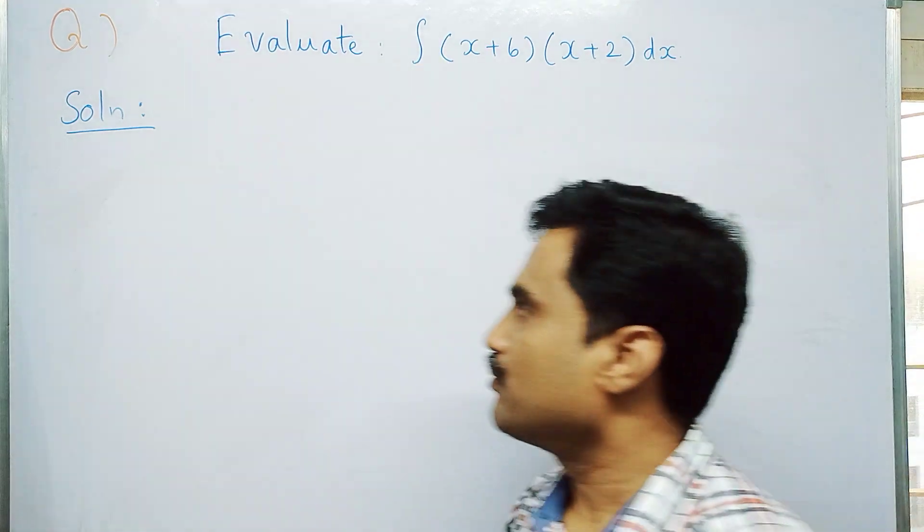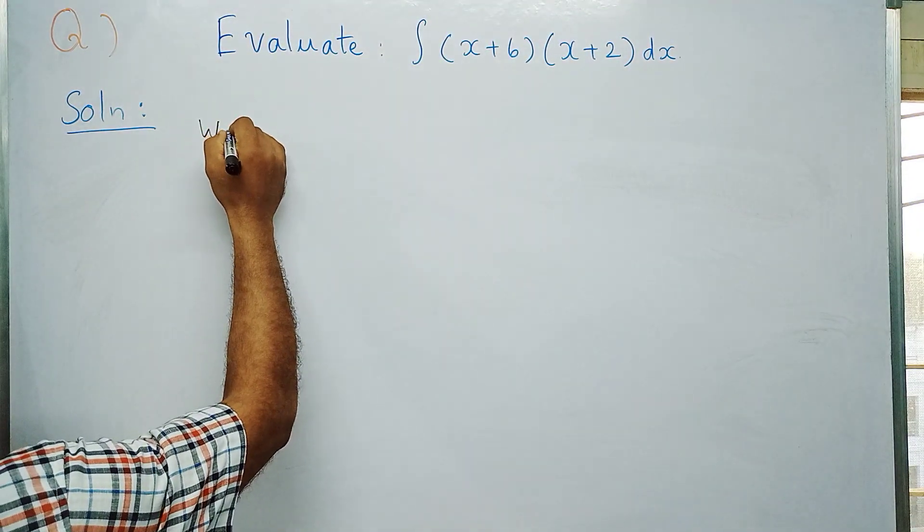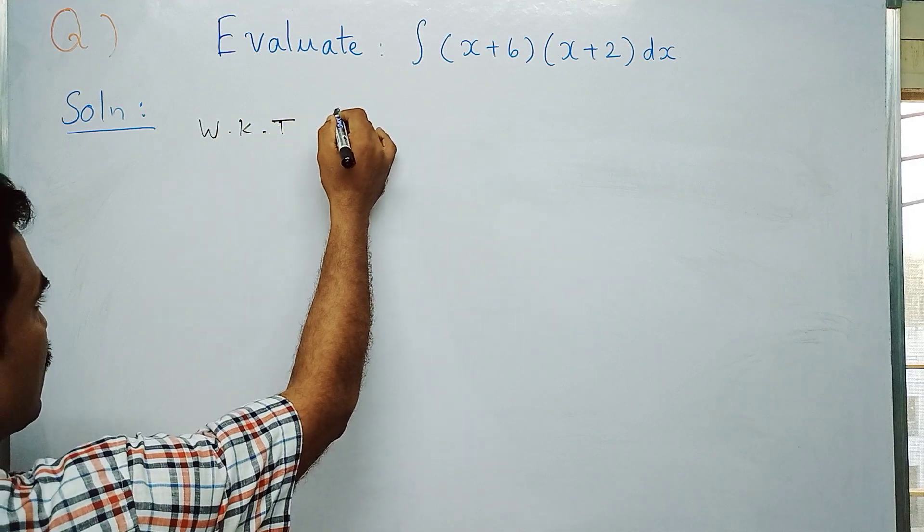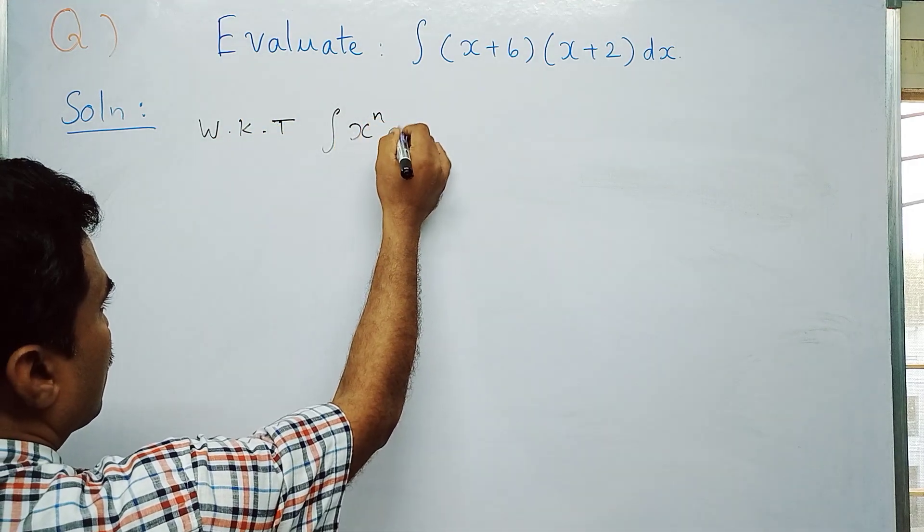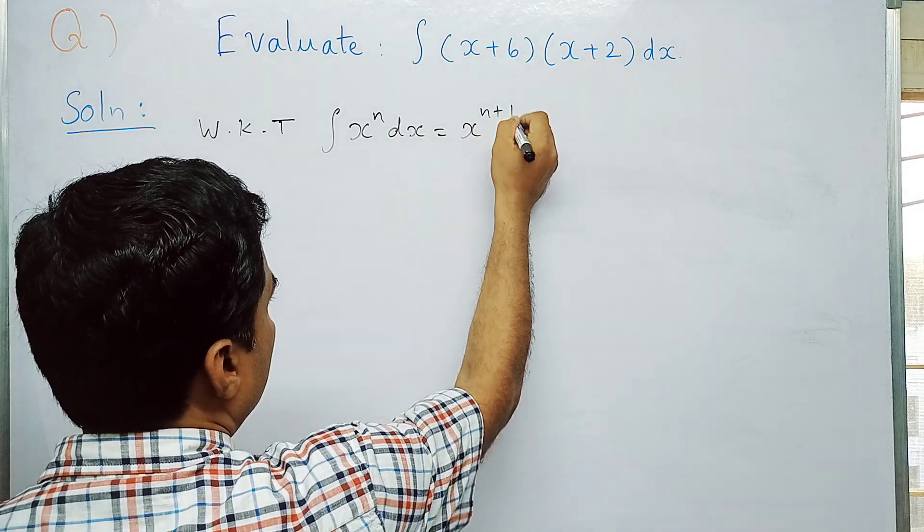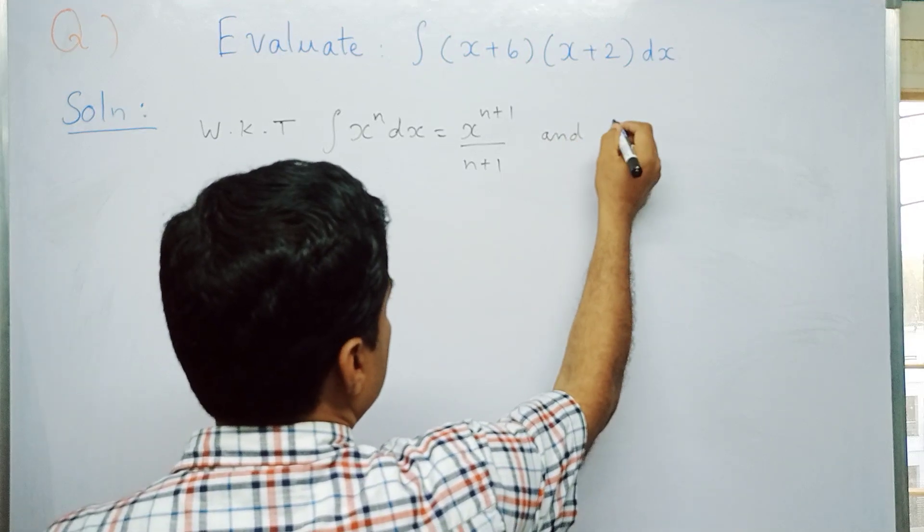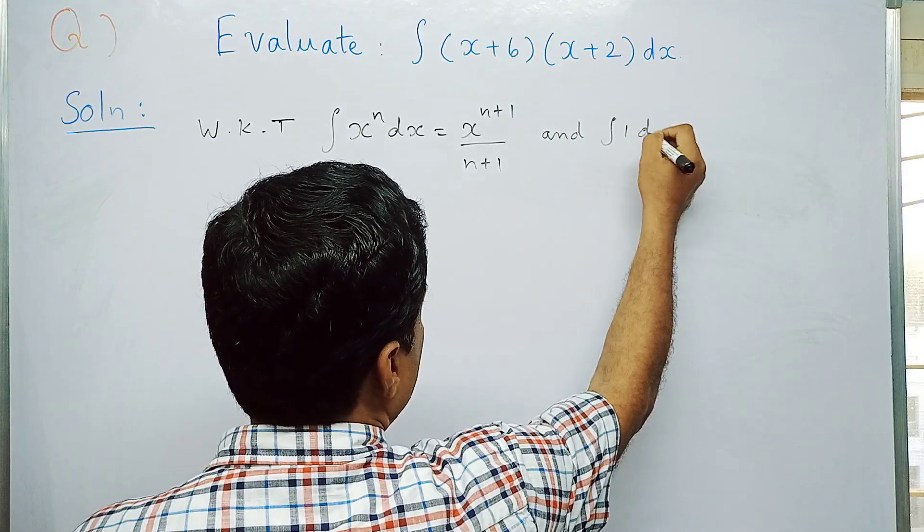By using these two formulas we can solve the problem. First we write those formulas. We know that integral x^n dx is x^(n+1)/(n+1), and the second formula is integral 1 dx is x.